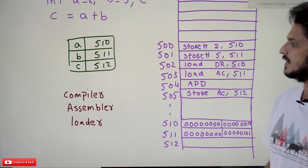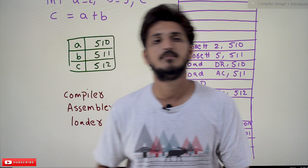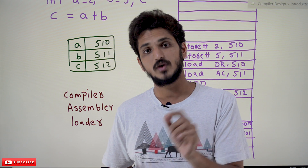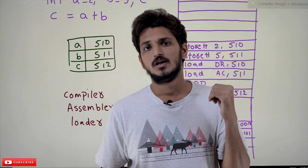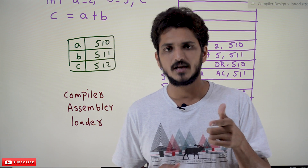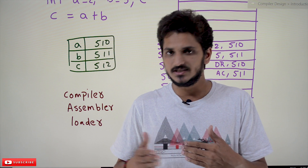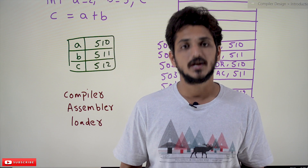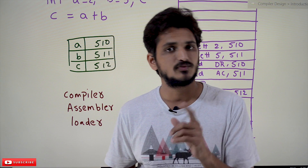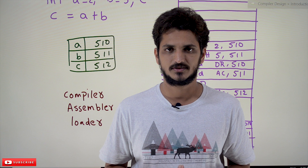How this high-level language is converted into machine-level instructions will be discussed in coming classes, but remembering this example will help you a lot. In our next class we are going to discuss relocatable code and will use this same example. If you don't understand, please watch it again multiple times until you understand — then the remaining classes will be easy. If you have any questions, post them in the comment section below. Thanks for watching — please subscribe to our channel and press the bell icon for the latest updates.